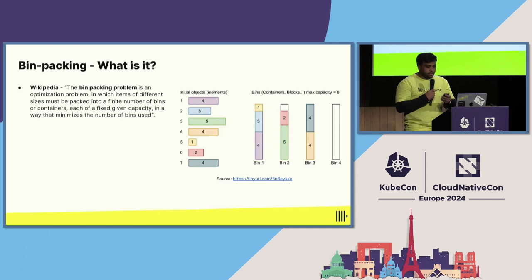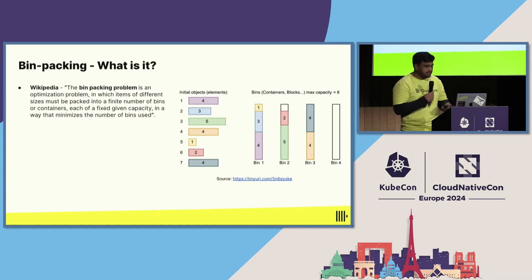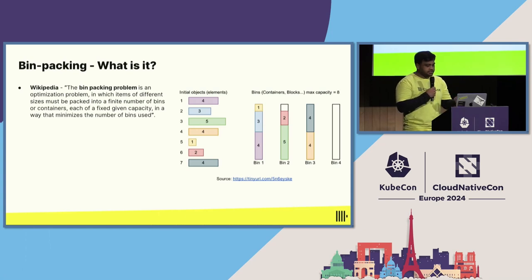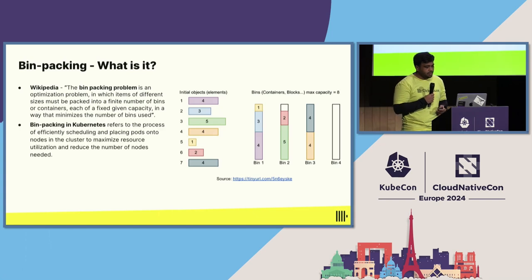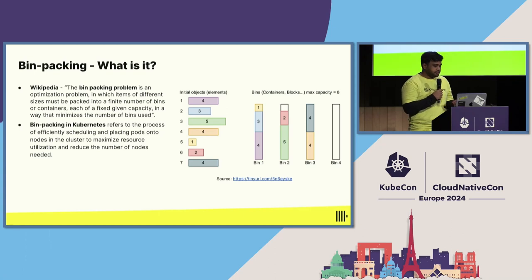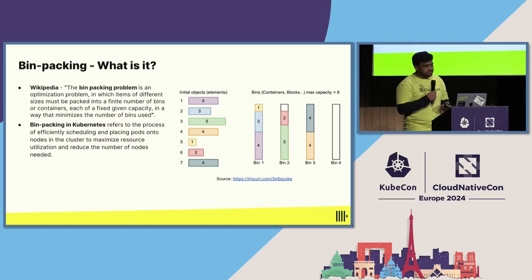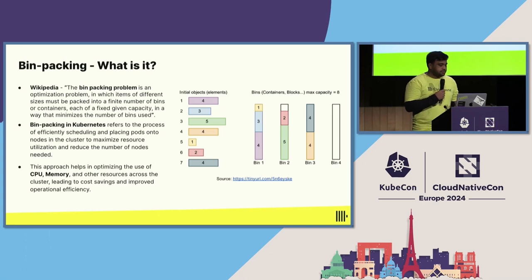If you look at this picture, on the left side we have an initial set of objects that individually have some weights, and on the right we have bins with max capacity. Using bin packing we can fit all of these elements in only three nodes instead of four, saving us the cost of one bin. Specifically in Kubernetes, bin packing refers to efficiently scheduling pods onto nodes to maximize resource utilization and minimize the number of nodes needed, leading to cost savings and improved efficiency.